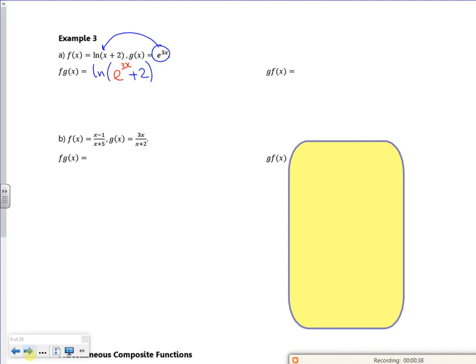If I do g of f of x, I'm going to put f of x into it. And the e, so the 3 lots of log x plus 2. Now that I can do something with. Because I can take the 3 up as a power. So I've got e, so the ln, x plus 2 cubed. And then the e and the ln cancel. And I've got x plus 2 cubed on its own.